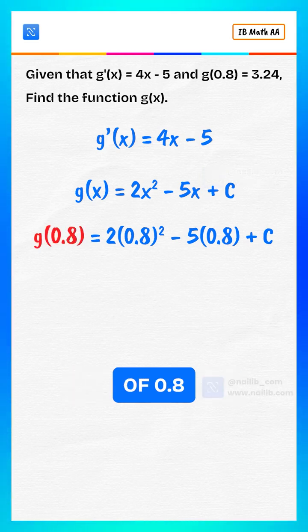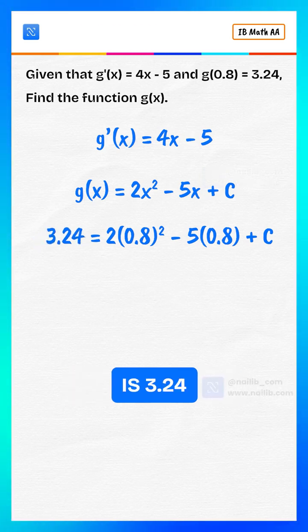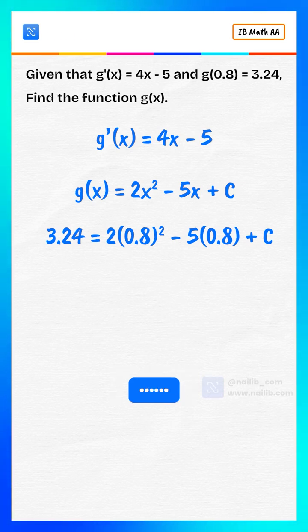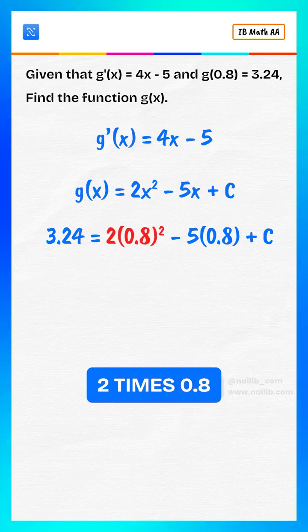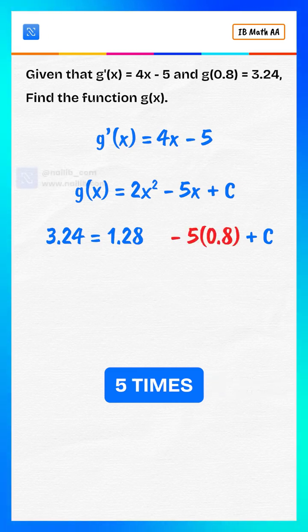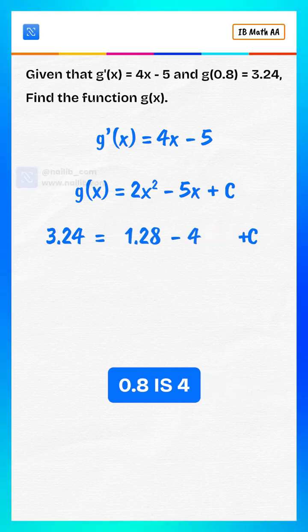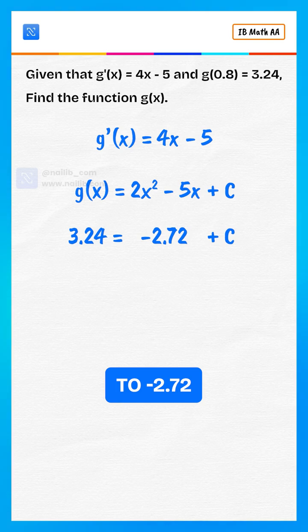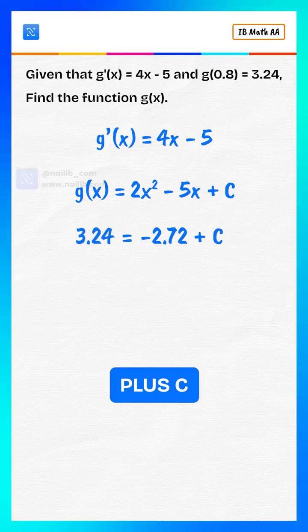The value of g of 0.8 is 3.24. 2 times 0.8 squared is 1.28. 5 times 0.8 is 4, which simplifies to negative 2.72 plus c.